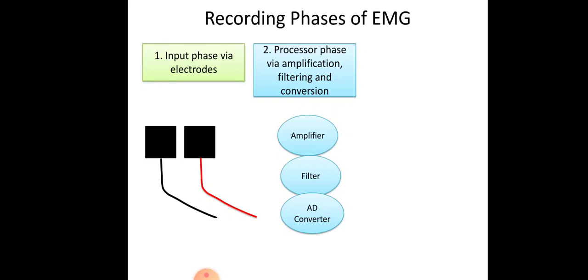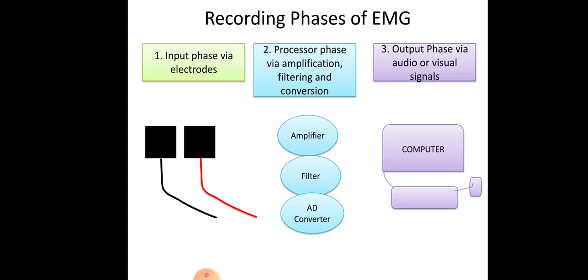In summary of the phases: signals enter via electrode in the input phase, then get amplified and filtered in the processor phase, and after conversion they are displayed or heard in the output phase via audio or visual signals, such as on a computer display.